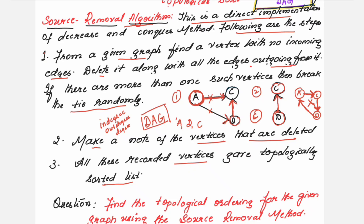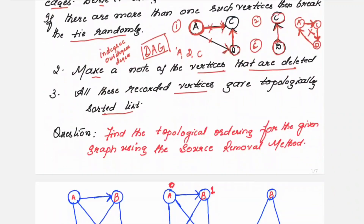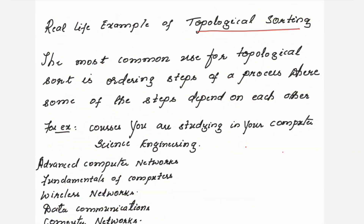I will give you a real-life example for topological sorting. Whenever we show a directed edge, it means there is a dependency on that particular task. As stated, vertices represent tasks and edges represent the constraints that one task must be performed before the other. The most common use for topological sorting is ordering the steps of a process where some steps depend on others.